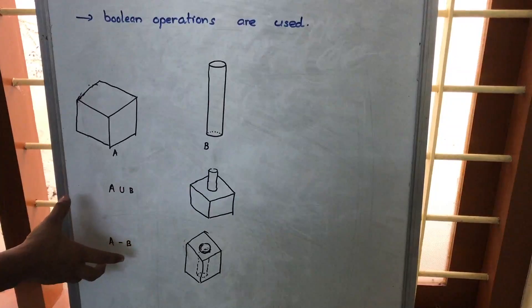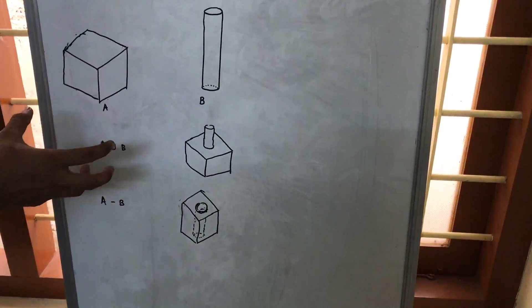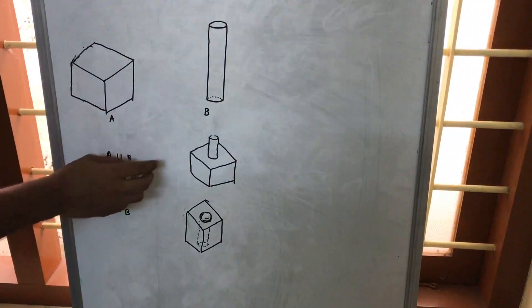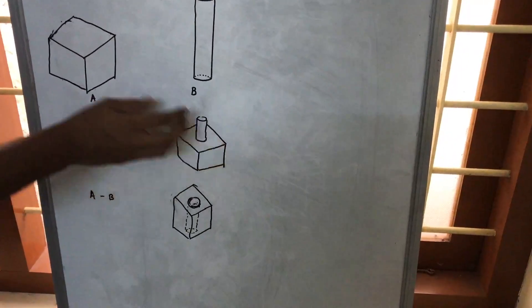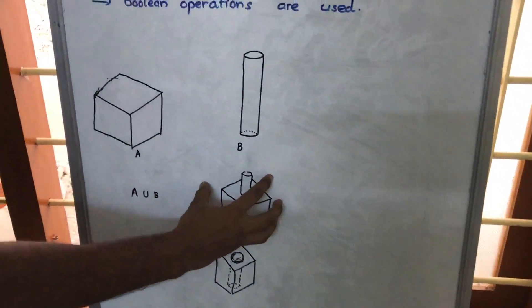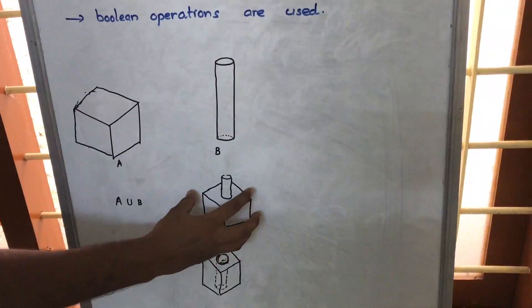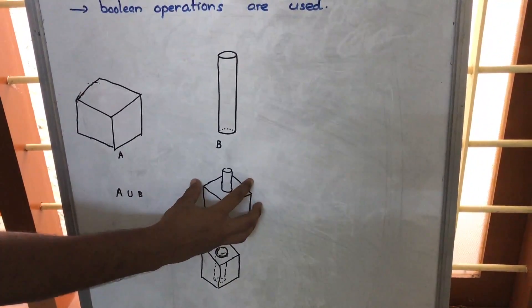Suppose that A union B, that is A and B are joined. If A union B, we get a figure like this. A and B both are joined so that we are getting a new figure somewhere like this.